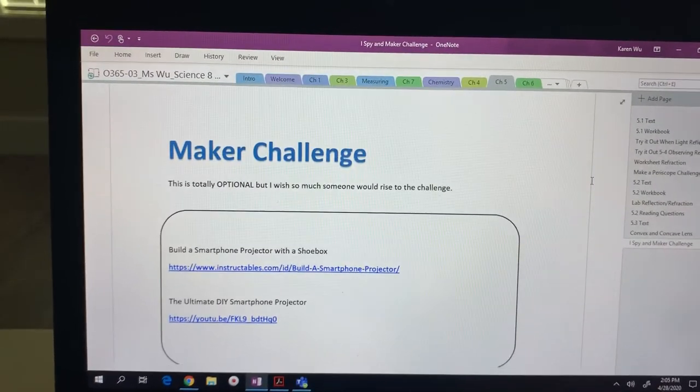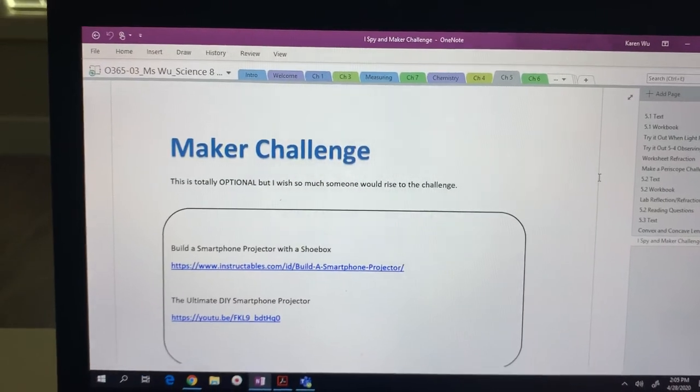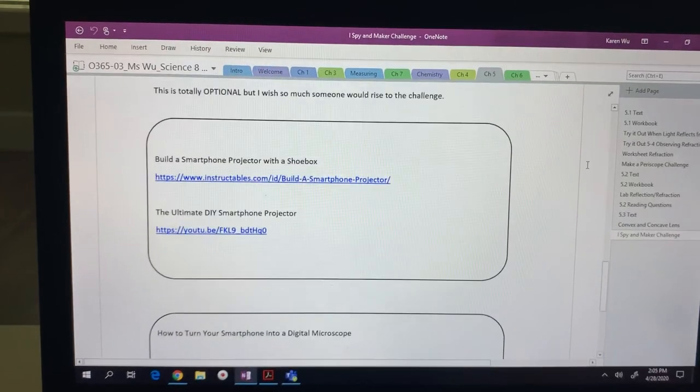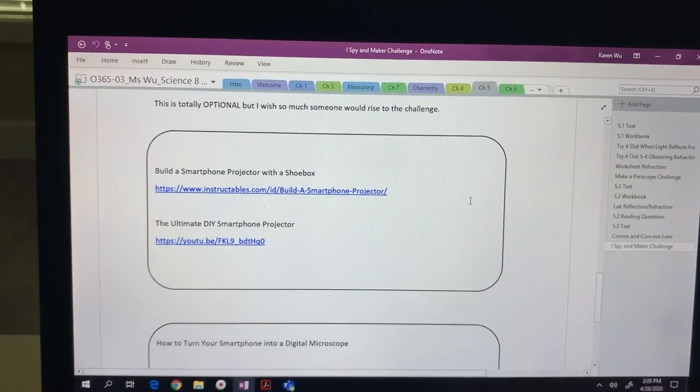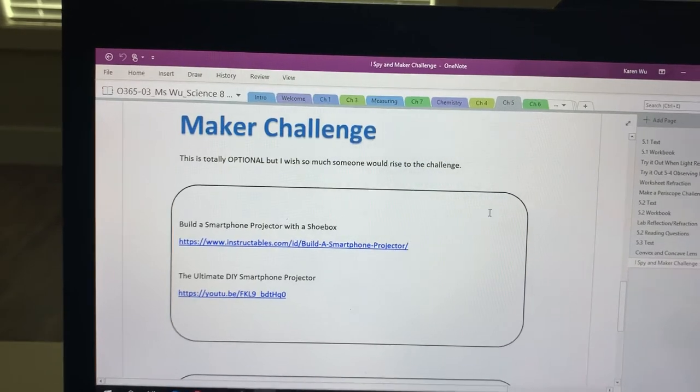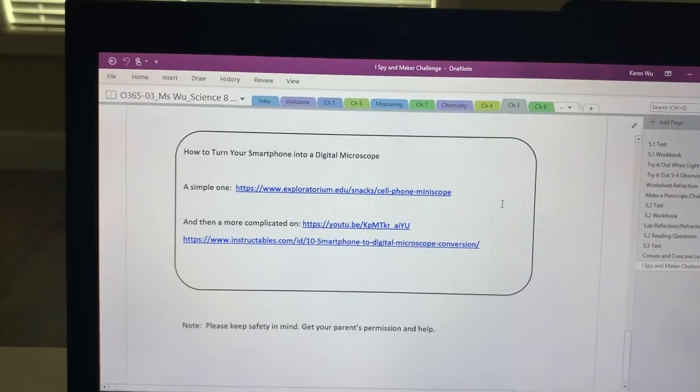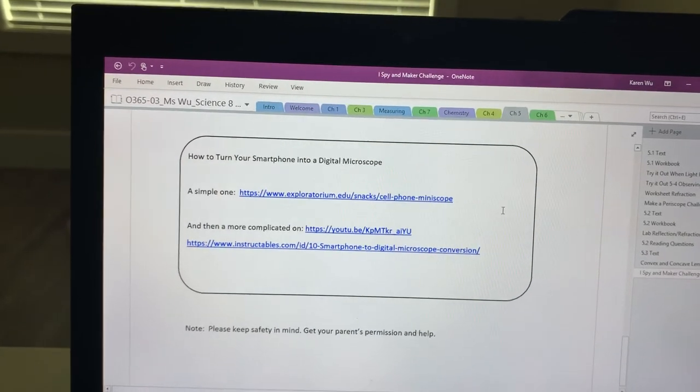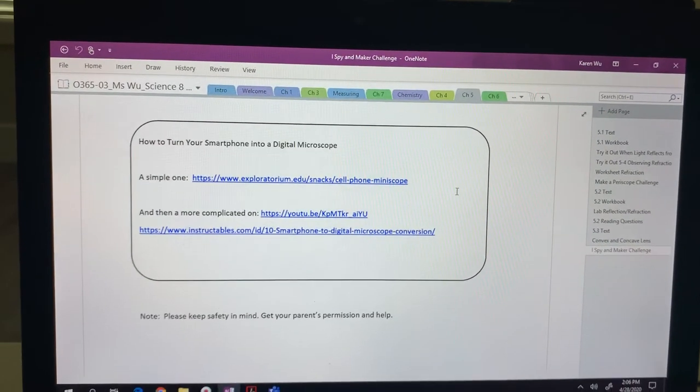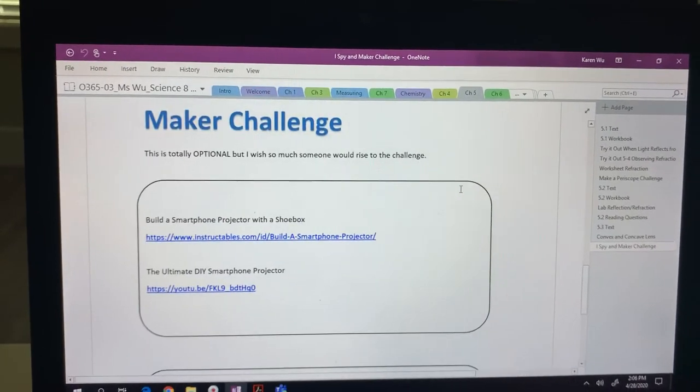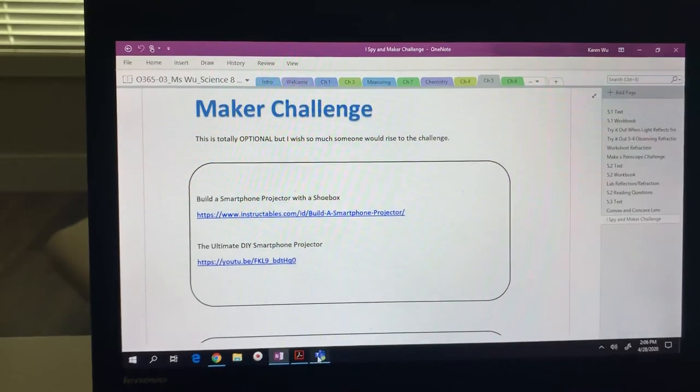And then finally that optional challenge. Please, please, please, I want to be able to see some of your work. That would be so cool. And I'm going to make that challenge myself too. I really want to build one of these. I'll see what I can find. For the first optional challenge, it's going to need a magnifying glass, and the second optional challenge needs the lens from a laser pointer.